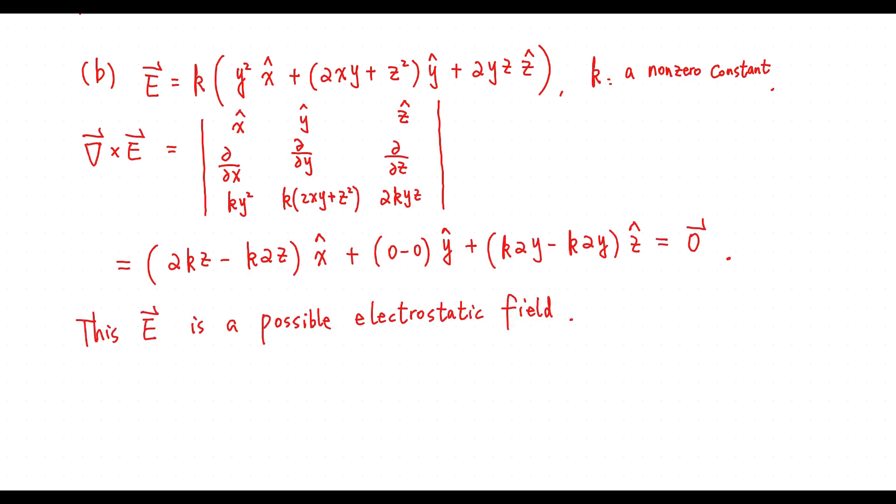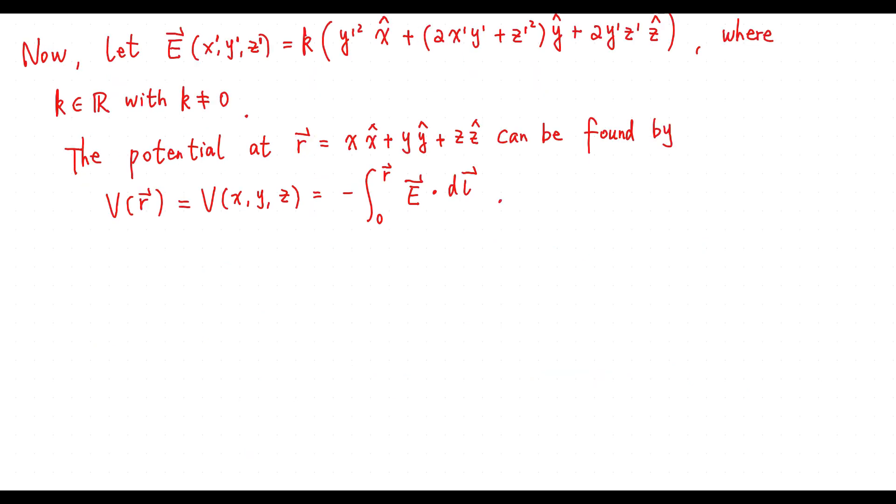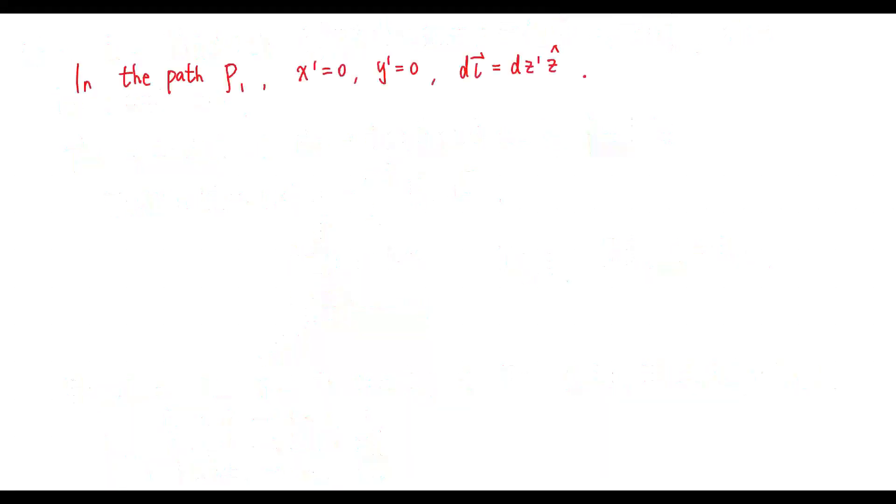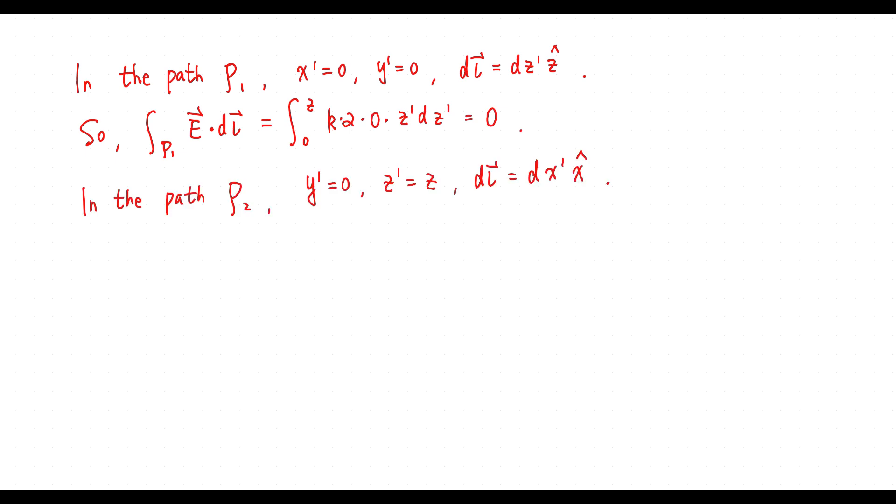Now, let E be given by this one. The potential V can be found by this integral. We choose the path P illustrated in figure 1. In the path P1, we have this one. So the integral is given by this value. In the path P2, we have this one. So the integral is given by this value.